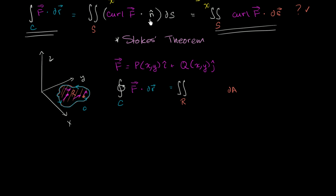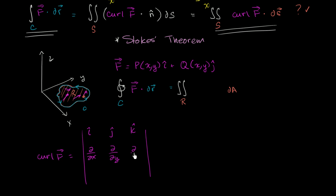Let's think about what curl of F dot n would actually be. The curl of F — the way I always remember it — is we're going to take the determinant of this matrix with i, j, k; partial with respect to x; partial with respect to y; partial with respect to z. This is just the definition of taking the curl — we're figuring out how much this vector field would cause something to spin. The i-component is our function p (just a function of x and y), the j-component is the function q, and there was no z-component, so 0.